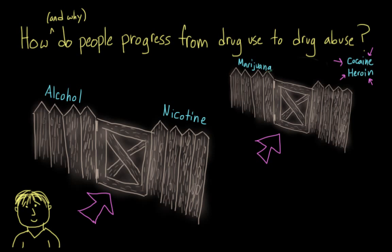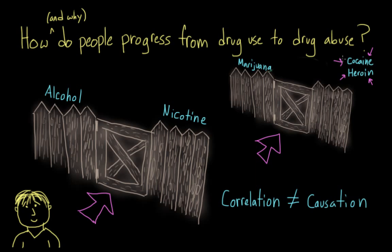But there are a few problems with this theory. The first is that correlation does not imply causation. Just because individuals have the tendency to follow a certain path for drug use doesn't mean that one causes the other. It could be that there's a third factor that's more important — maybe any of the risk factors mentioned earlier. So maybe some individuals who use heroin and cocaine would have wound up using them even without alcohol and cigarettes first.